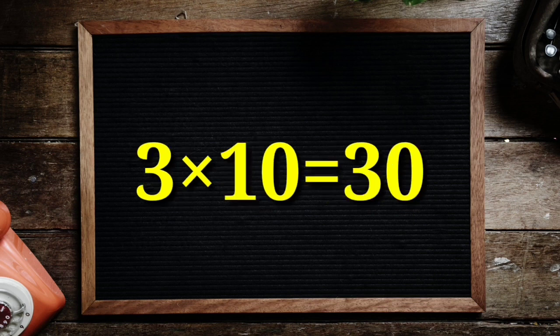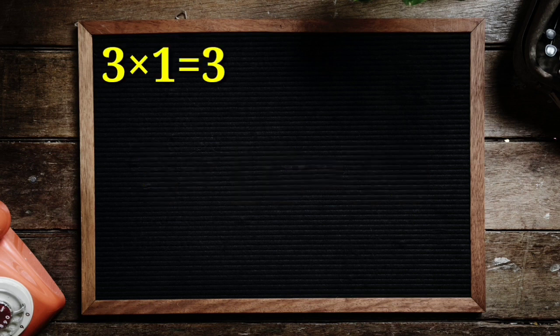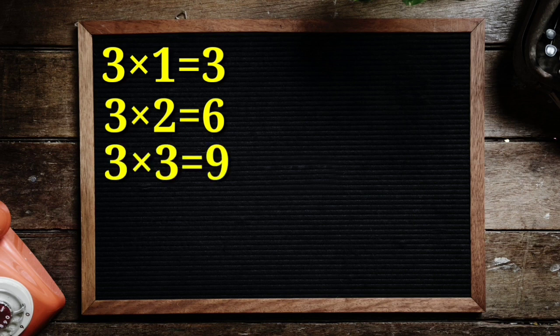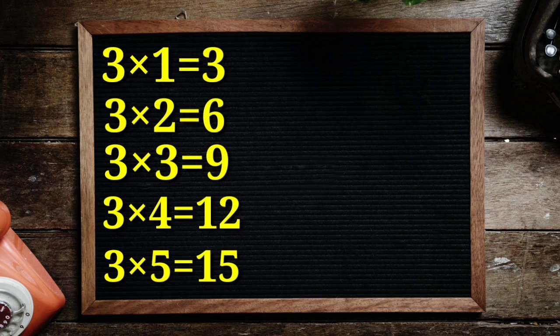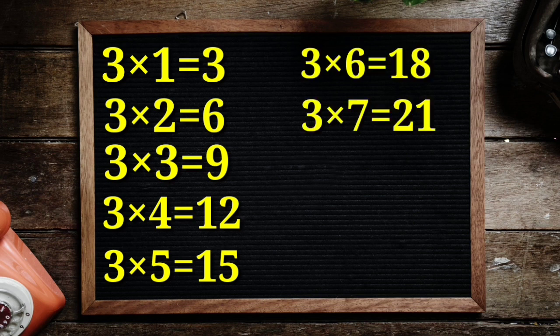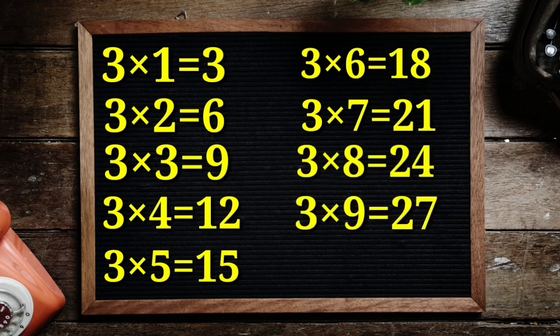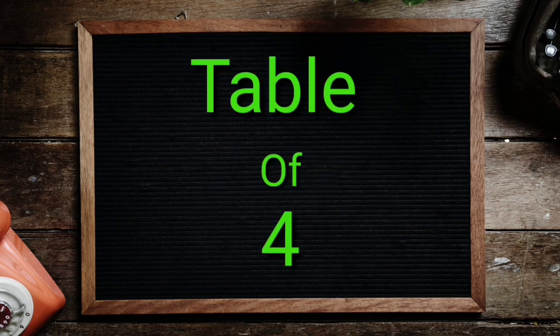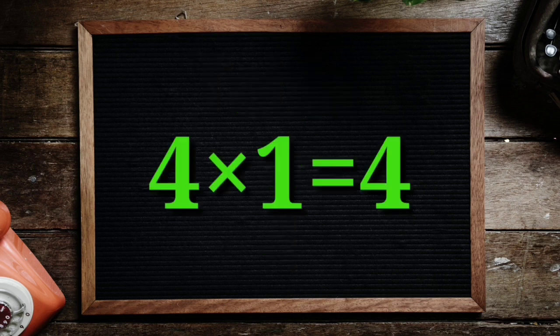3 10's are 30. 3 1's are 3, 3 2's are 6, 3 3's are 9, 3 4's are 12, 3 5's are 15, 3 6's are 18, 3 7's are 21, 3 8's are 24, 3 9's are 27, 3 10's are 30. Table of 4.